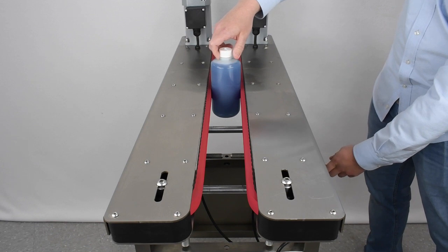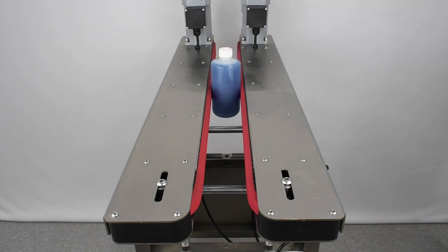Now, move your cassettes back inwards until the belts are lightly squeezing your container. The pressure applied should not warp the container in any way, but should hold the container up if you let it go.